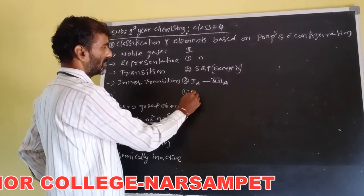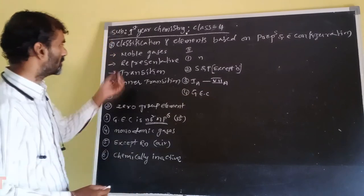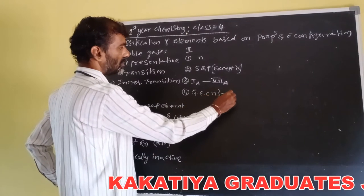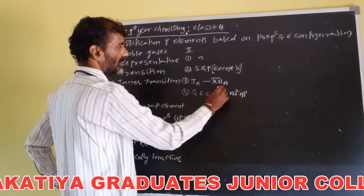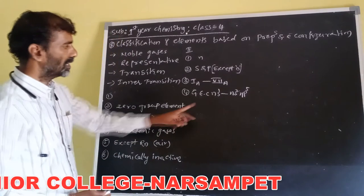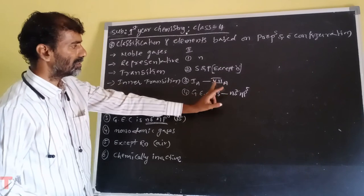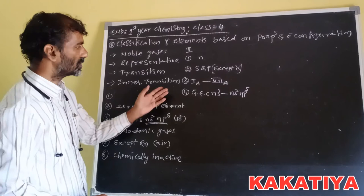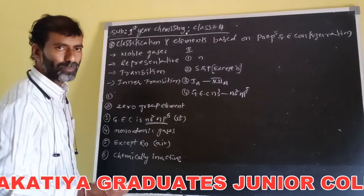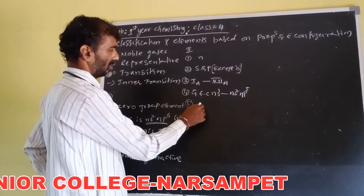The general electronic configuration of representative elements is ns1-2 to ns2 np1-5. ns1 belongs to group 1, and ns2 np5 belongs to group 7. The last shell is incomplete in these elements.